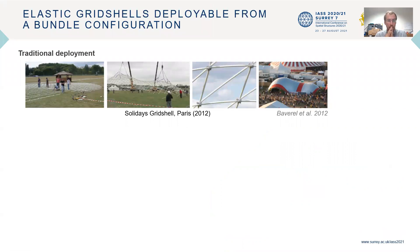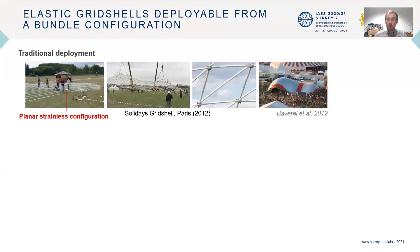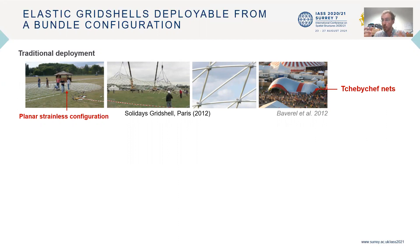Elastic grid shells have a really interesting structural typology because they have very low fabrication costs. They allow to build very lightweight long span structures and they require very little formwork. Usually their geometry is constrained by the fact that we want a planar strainless configuration, and this will impose having a constant distance between nodes such that the grid shell pattern on your surface will follow a Chebyshev net, an object that has been quite well studied in the literature.